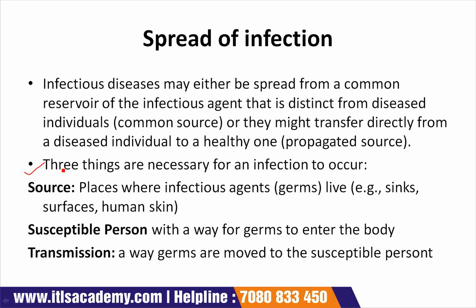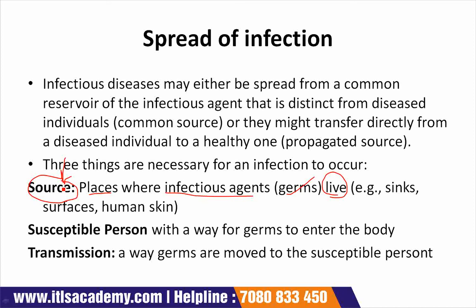Three things are necessary for an infection to occur. The first is a source — the place where the infection spreads or initiates. A source is where infectious agents like germs live. These may be surfaces or human skin.